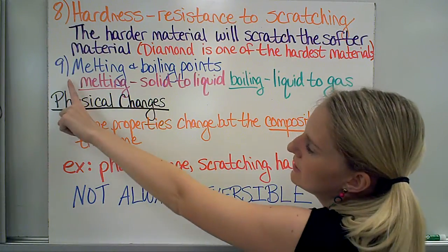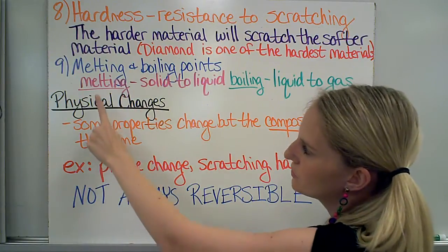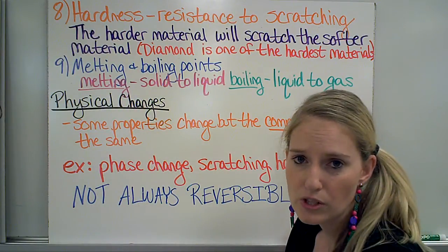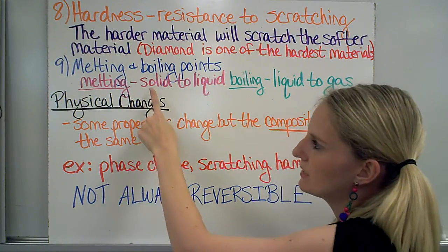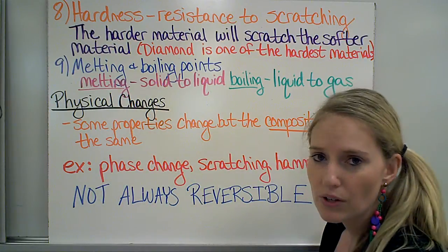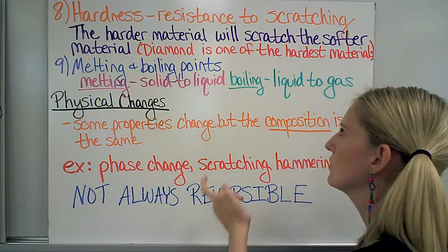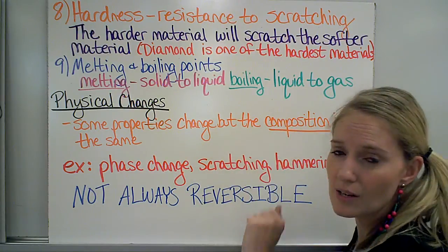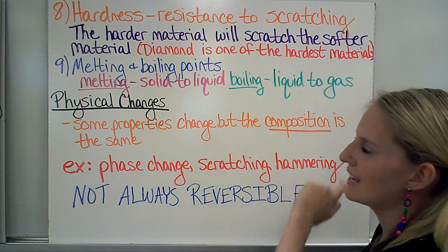Another physical property is melting and boiling points. The melting point is the temperature at which an object goes from being a solid to a liquid, and the boiling point is the temperature at which a liquid becomes a gas.